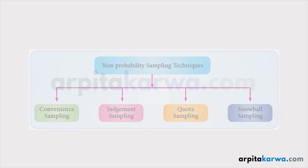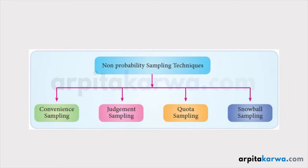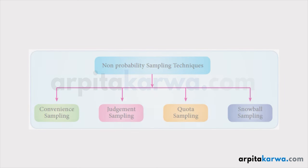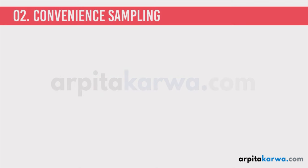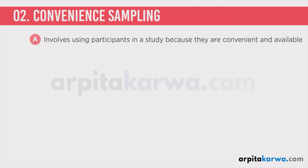Now there are different types of non-probability sampling. In this lecture we are going to look at the four most important non-probability sampling types which are asked in the NET exam. The first one is convenience sampling. Convenience sampling involves using participants in a study because they are convenient and available. Whenever you want to do research where you can conveniently pick a few participants and conduct research on them, that is known as convenience sampling.